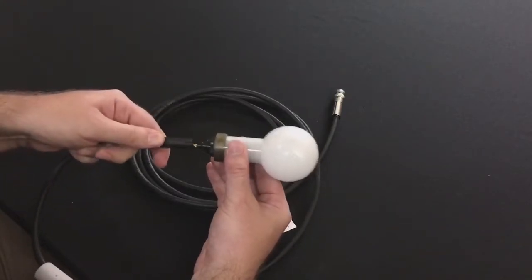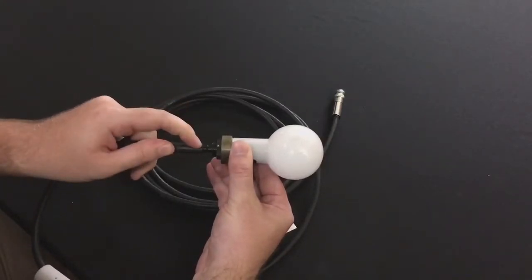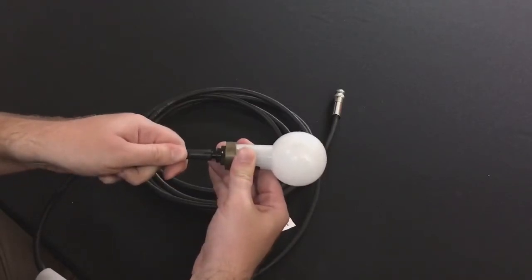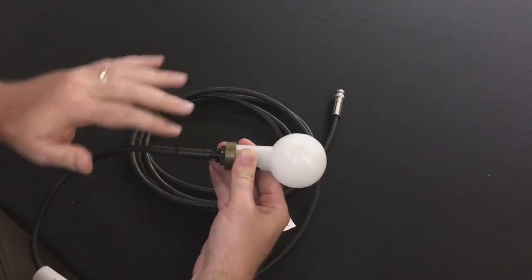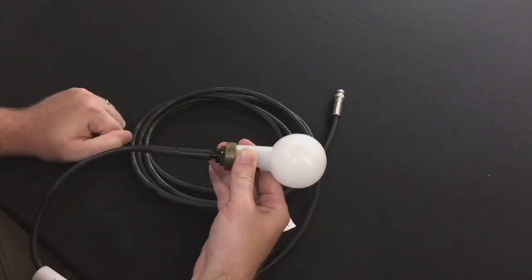So when you go to connect it, make sure that you line up the raised nub with the yellow dot and push like this. Now this appears to be fully connected, but it is not.